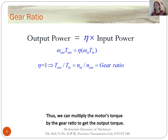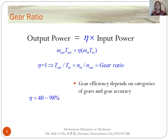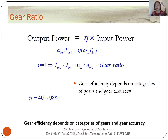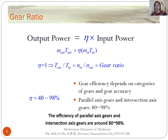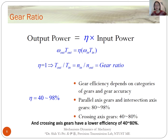We can multiply the motor's torque by the gear ratio to get the output torque. Gear efficiency depends on the categories of gears and gear accuracy. The efficiency of parallel axis gears and intersection axis gears is around 98 percent. Cross-axis gears have a lower efficiency of around 14 to 18 percent.